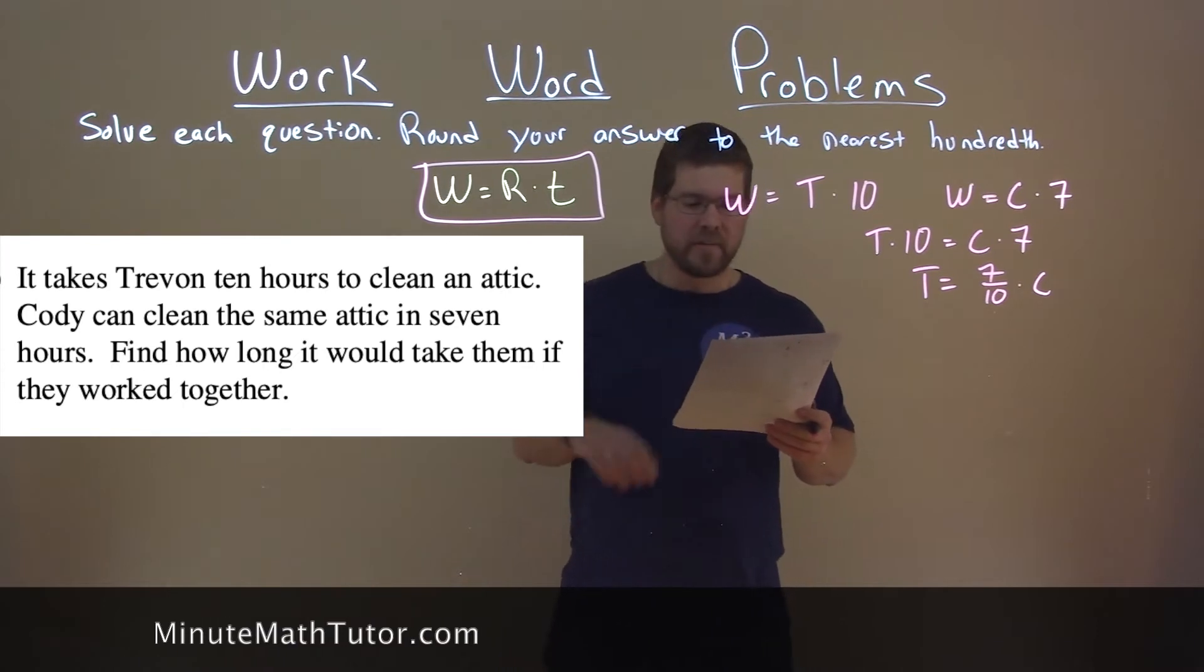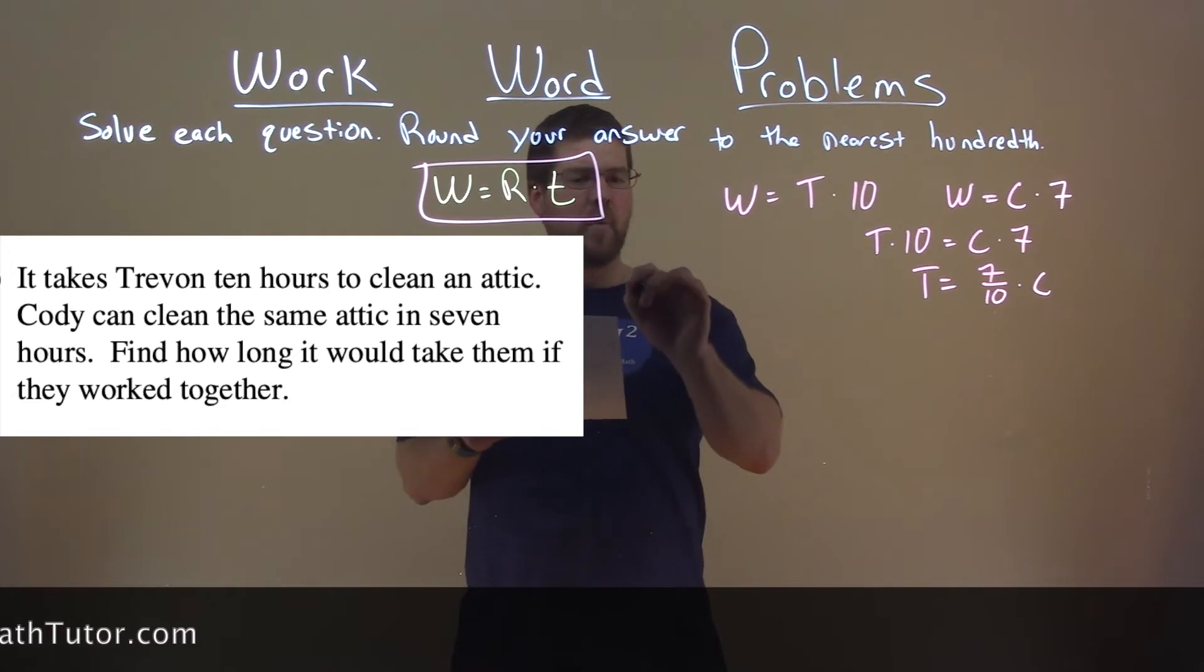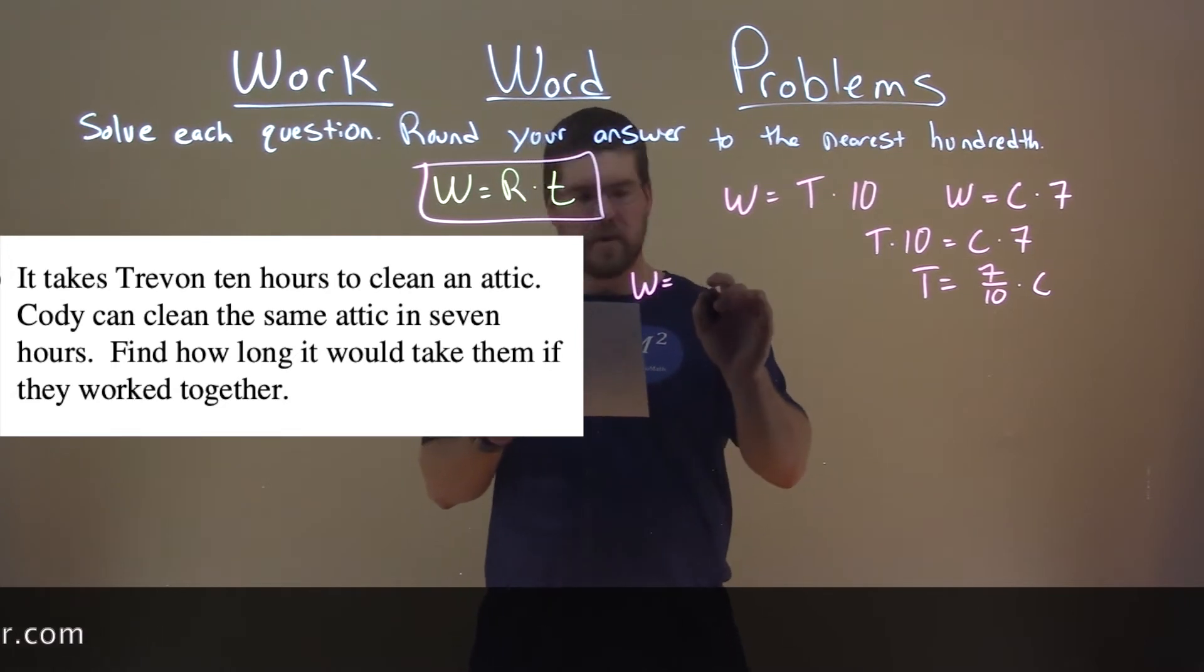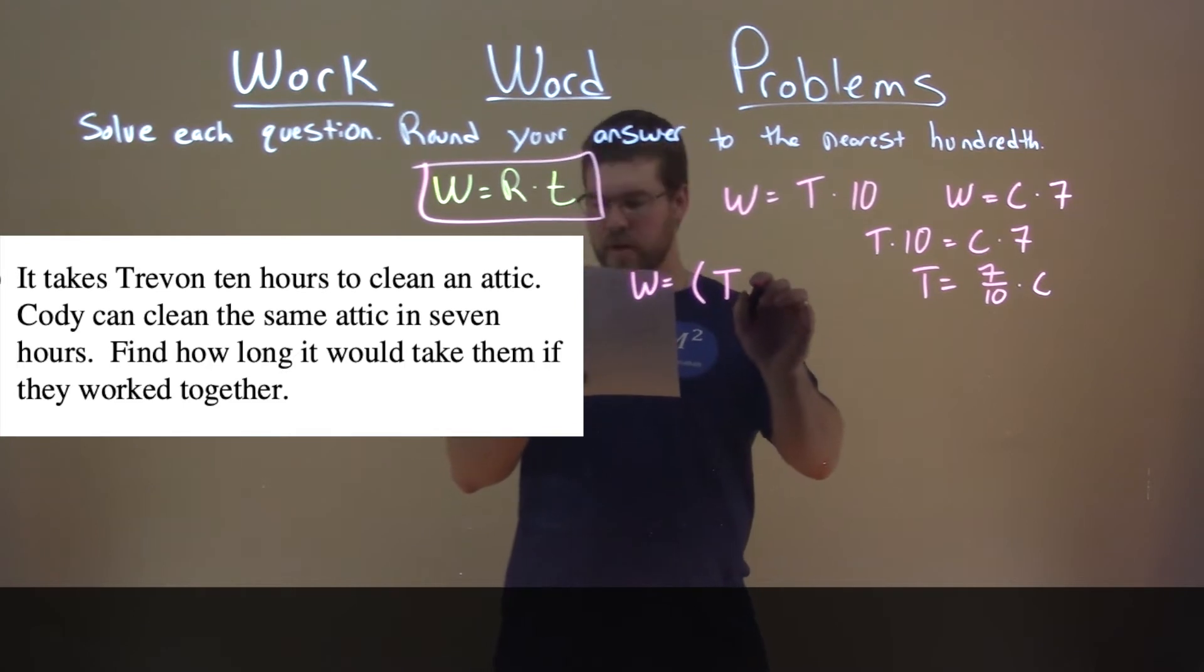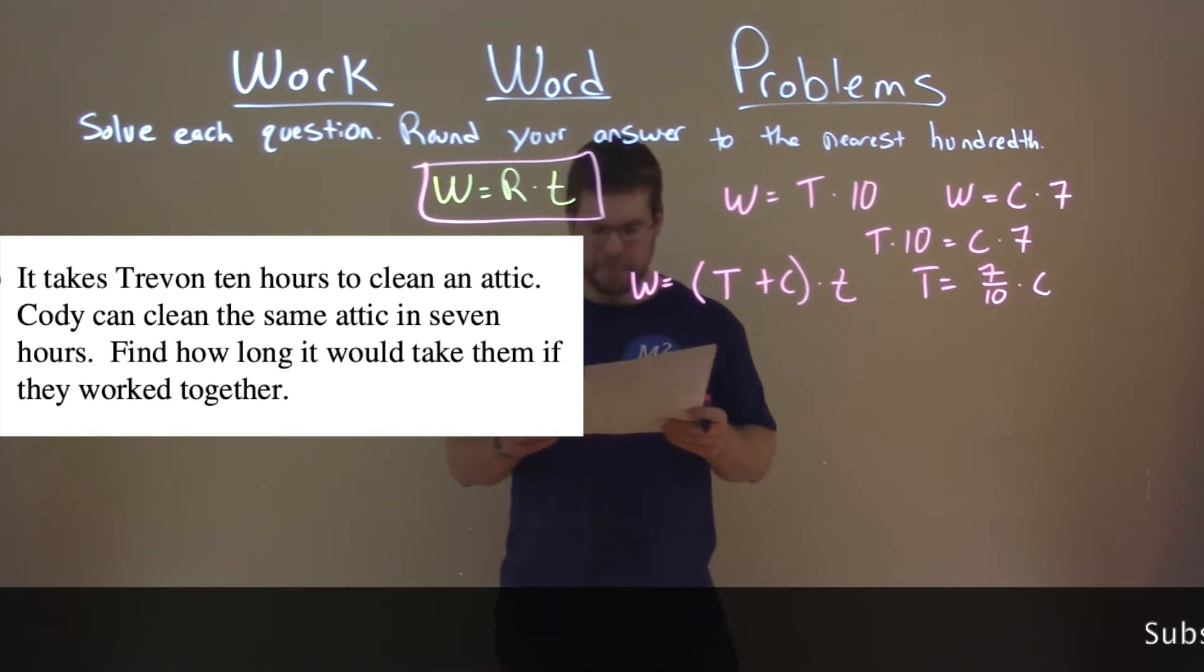Now they ask us here how long would it take if they work together, so that work, the same work, would be if they work together. So T's work rate plus C's work rate times little t for time.